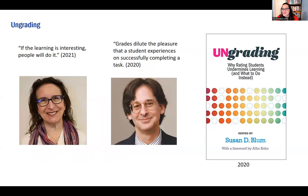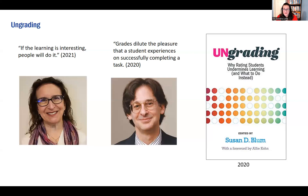We then shared the Ungrading book from 2020, edited by Susan Bloom, with many different authors — Alfie Kohn writes the foreword. A key quote: 'If learning is interesting, people will do it. Grades dilute the pleasures of successfully completing a task.' Similar across all three grading types is the idea that extra credit or participation grades are not equitable and not a true measure of student understanding, though the way grades are collected differs: specifications grading uses a rigorous pass/fail model, while equity grading and ungrading offer a greater span of revise-and-resubmit options.